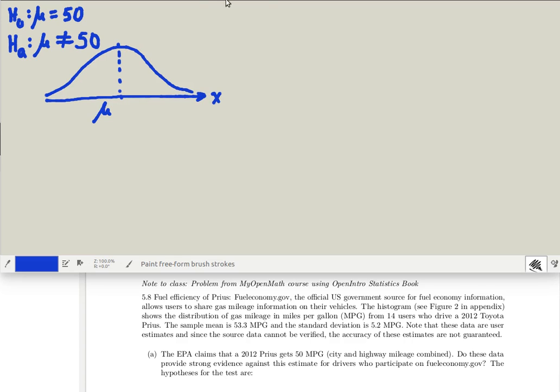It's always good to draw pictures when you're doing this. Suppose that we consider an X variable that is measuring the miles per gallon of the 2012 Priuses. Then we're going to assume that the null hypothesis is true. So the population mean is going to be 50. Of course, this population also has a standard deviation.